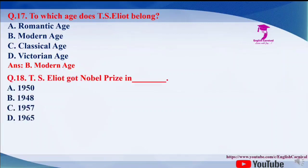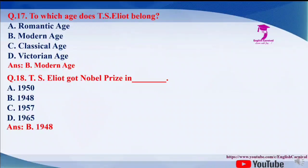Question number 18: T.S. Eliot got the Nobel Prize in which year? The options are A. 1950, B. 1948, C. 1957, and D. 1965. The correct answer of this question is B, 1948.